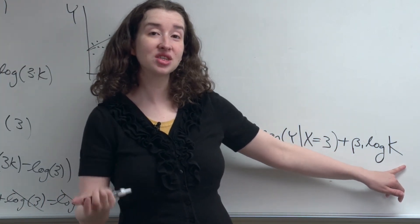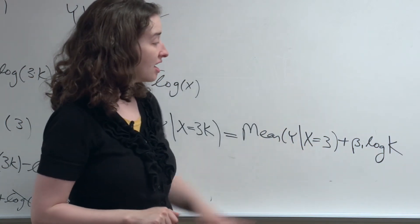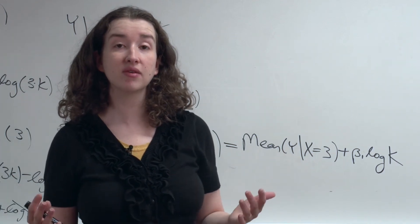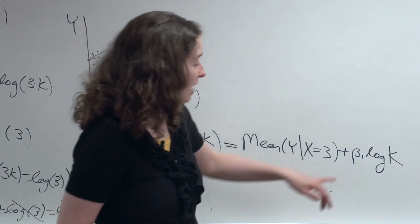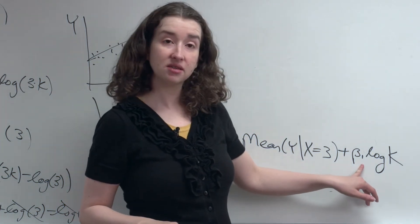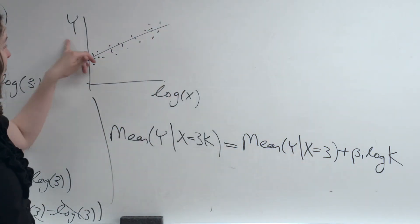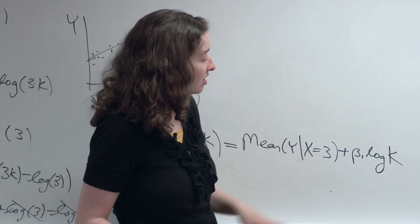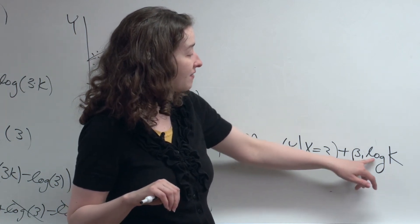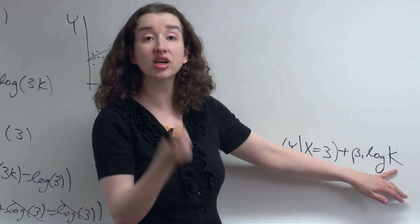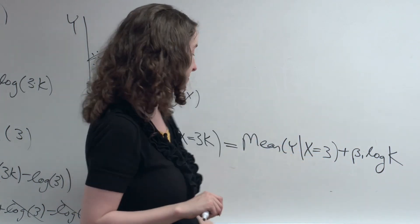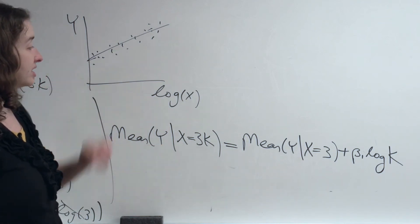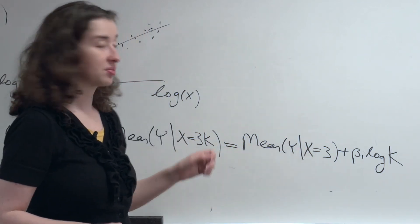And for any particular scenario, that's actually a fairly simple statement, because k is just some number that we can choose. For example, let's choose 2 — let's talk about what happens to the mean of y when x doubles. We have an estimate of beta 1, the slope for y on log of x. So we have some number — say our slope is 5. Then 5 times the log of 2 is just some number that we can calculate, and that's the amount that the mean of y increases by when x is multiplied by 2.